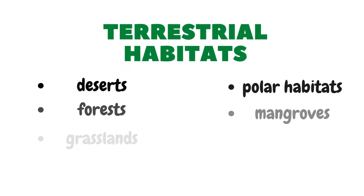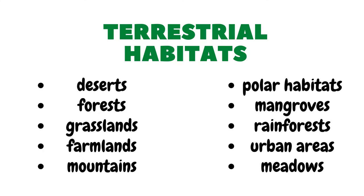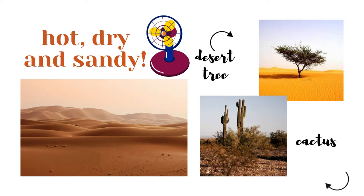Terrestrial habitats are habitats that are located in land ecosystems. Terrestrial habitats include deserts, forests, grasslands, farmlands, mountains, polar habitats, mangroves, rainforests, urban areas, and meadows.